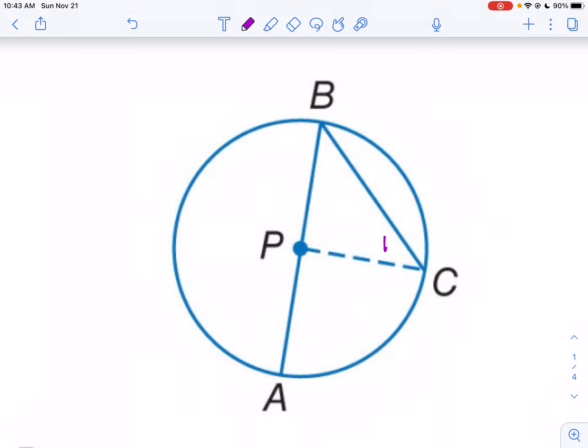Notice since it's isosceles I know angle one and angle two are the same. Well angle one plus angle two add up to the measure of angle three which is my central angle. So in other words the measure of angle three is going to be two times the measure of angle two. Or you can say the measure of angle two is one half of the measure of angle three.